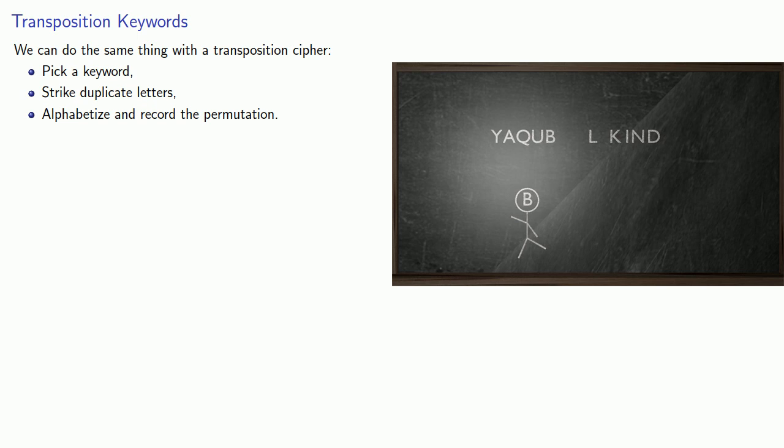We'll alphabetize the letters in our keyword, and to record our permutation, we want to track where everything goes. We can do that if we number the original places, and then identify where everything ended up. The Y in position 1 ended up at the end.